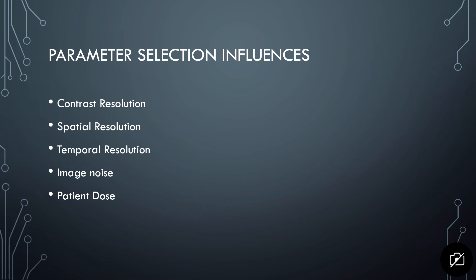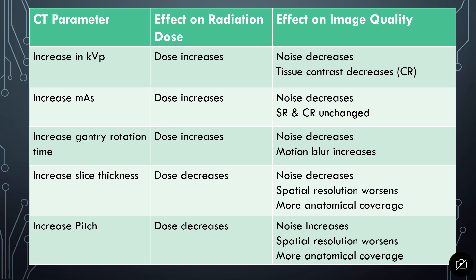It's important to understand the choices the CT technologist is making and how they impact image quality. This is a quick reference snapshot to show how those changes impact the images. If you increase the KVP — the energy of the x-rays reaching the patient — that will increase dose and actually decrease noise, because you'll have less electronic noise and more counts or information per slice contributing to the image. Just like in nuclear medicine, the more counts you have, the less percentage of the image is noise.